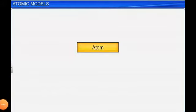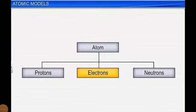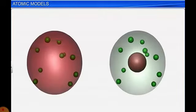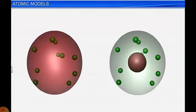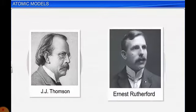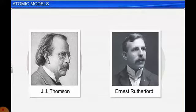Let's start with the atomic model, the second part of structure of atom. An atom has three subatomic particles: proton, electron, and neutron. The atomic model is the explanation or arrangement of electron, proton, and neutron in an atom. Different models have been suggested; the first was by JJ Thomson, followed by Ernst Rutherford, who gave initial development toward the atomic model.